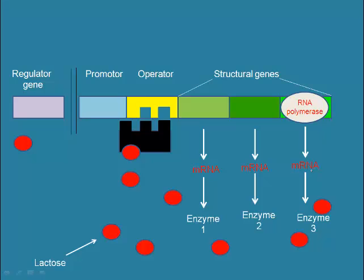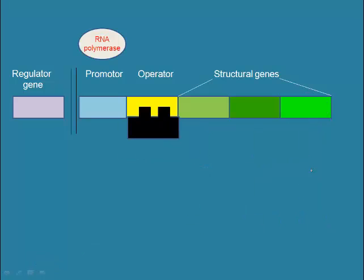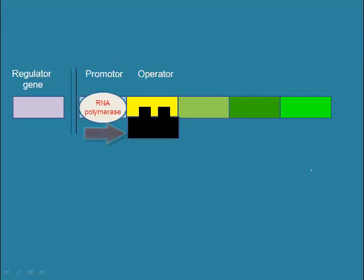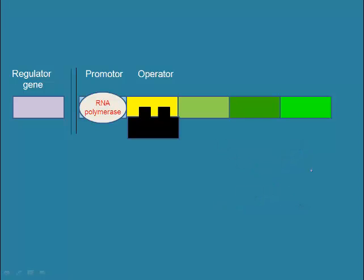The enzymes for digestion of lactose are produced, and lactose is digested, even the one bound to the repressor. When this occurs, the repressor reverts to its original shape and binds to the operator, thereby blocking RNA polymerase once again. As a result, the genes for the breakdown of lactose are no longer transcribed. This self-regulatory mechanism in E. coli bacteria ensures that whenever lactose is absent, energy to create enzymes for its breakdown will not be used.